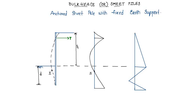Anchored sheet pile with fixed earth support — fixed earth support means this support is fixed and hence rotation is not allowed. Therefore the deflection shape will be in a specific form, where I is the inflection point.